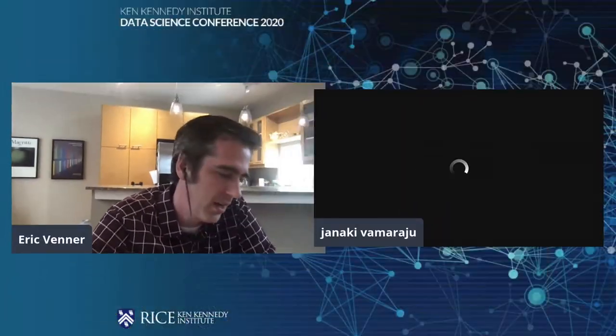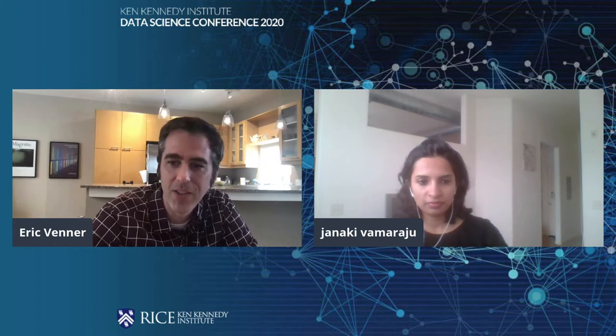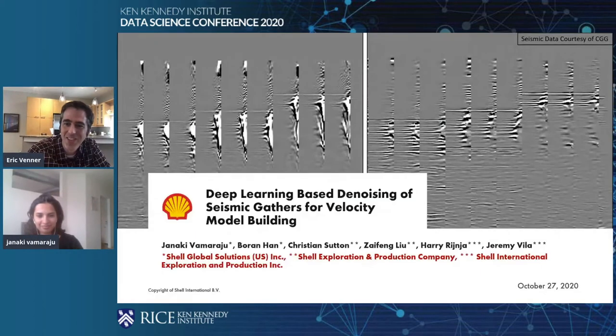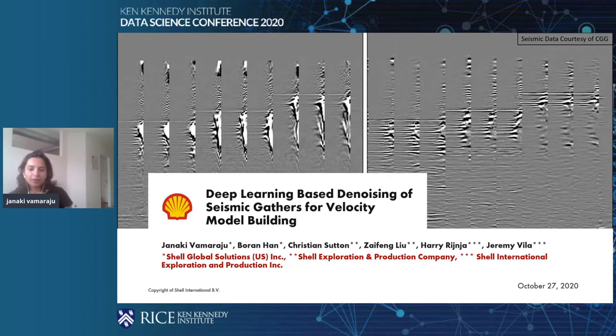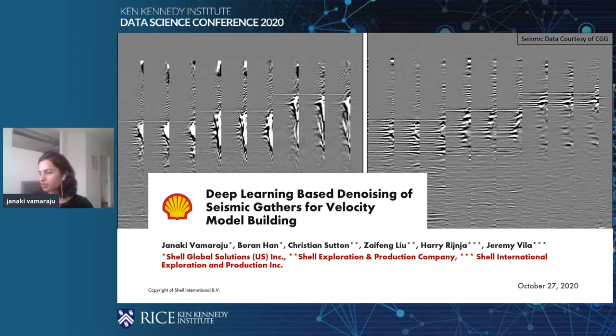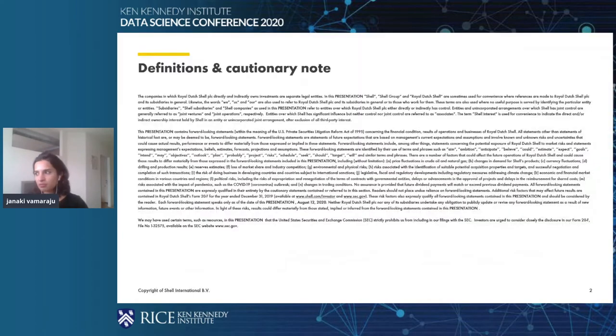Next up, we have Janaki Vamuraju, who is a machine learning scientist at Shell. She'll be talking about deep learning based seismic denoising of migrated gathers for velocity model building. I'll be talking about applying deep learning based denoising of seismic gathers for velocity model building.